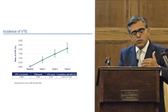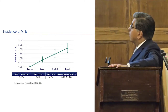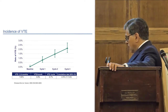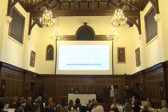Data from Khorana and colleagues in the United States show a near-linear relationship between reported thromboembolic complications and cycles of chemotherapy in the early cycles. In a large unselected population, they determined an overall frequency of venous thromboembolism of approximately 0.8% per month or 0.7% per cycle. This is an important observation, but an area that requires a great deal more work regarding how to apply risk assessment to identifying which cancer patients should receive thromboprophylaxis.